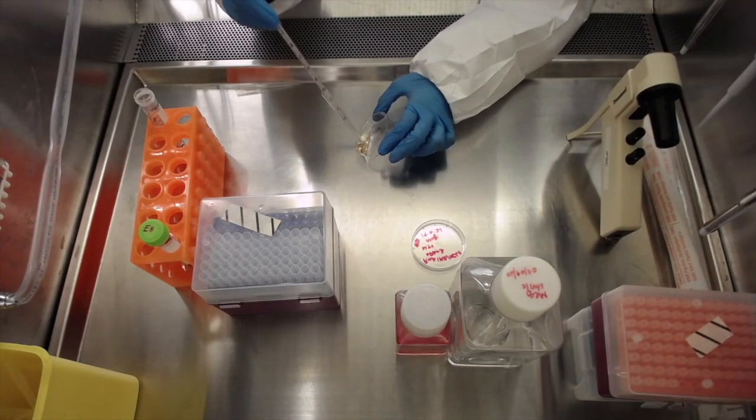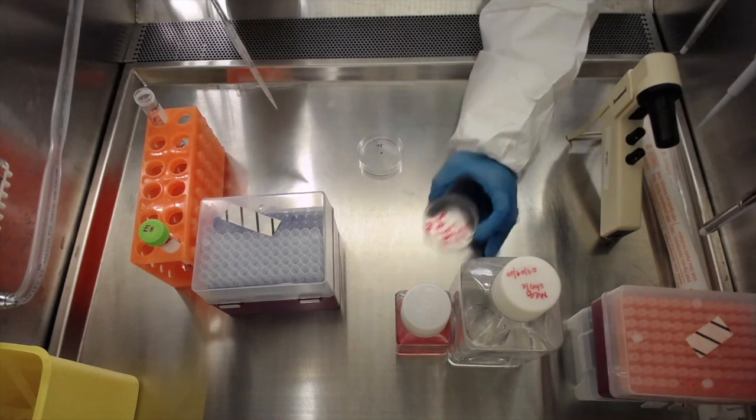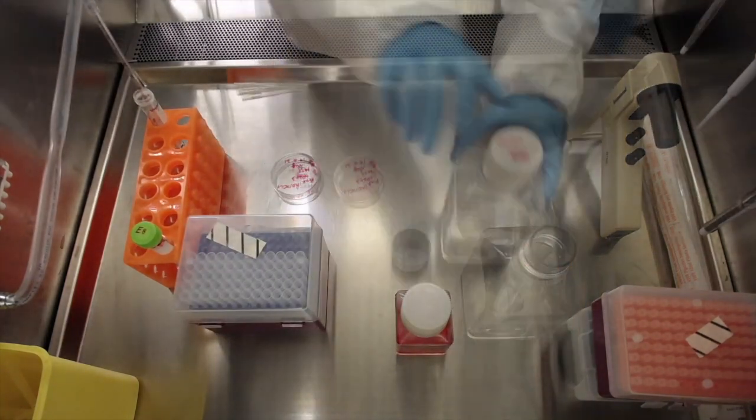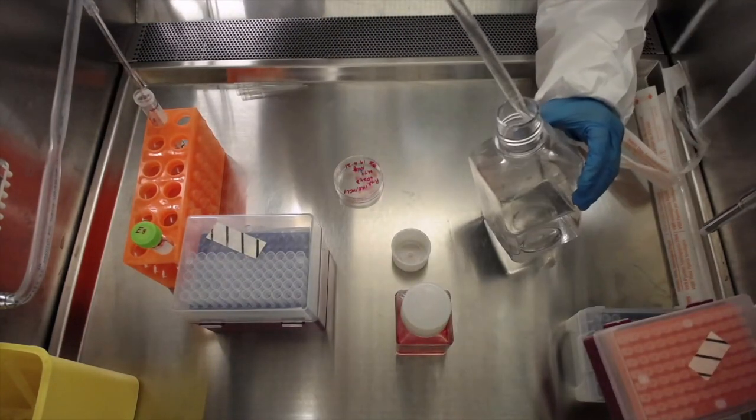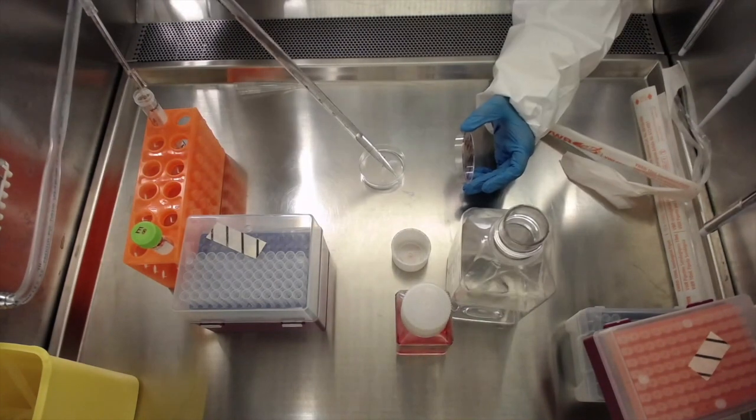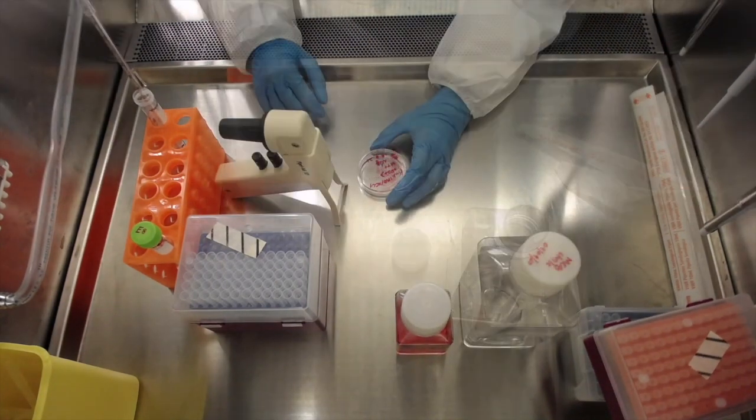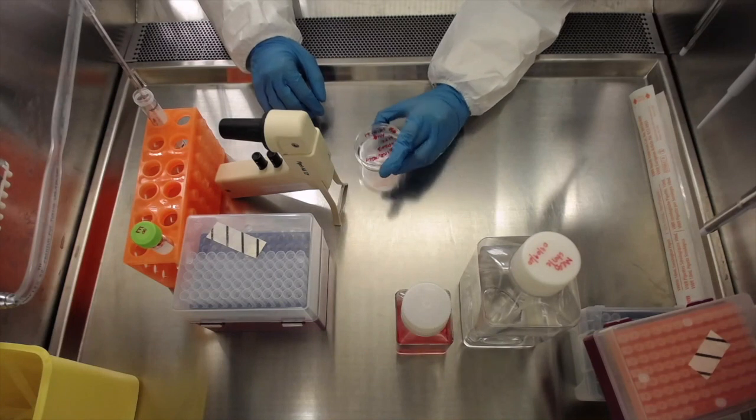To start, remove the media by vacuum aspiration. Next, wash the cells with 2 milliliters of sterile DPBS. Swirl the dish to make sure that the DPBS evenly covers the dish.